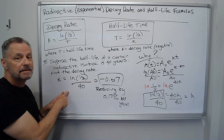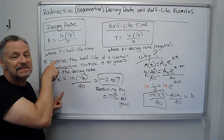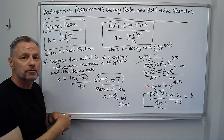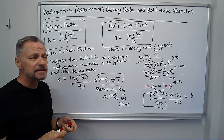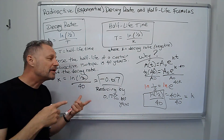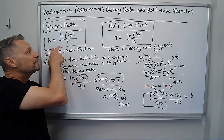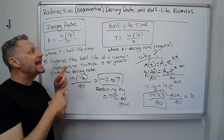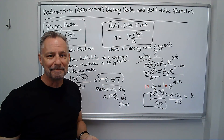Shortcut — memorize it, easy one to memorize. If not, you have to go through the steps, but the steps aren't too bad. If you know how to solve exponential problems, you can solve that. But those are nice formulas, either for decay rate or for the half-life time.